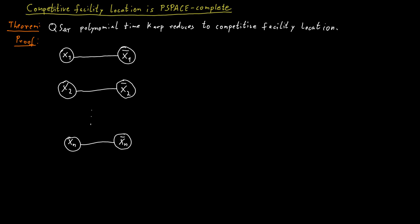Specifically, we choose a large constant c and assign a value of c^n to x1 and not x1, then c^(n-1) to x2 and not x2, continuing down to a value of c for the nodes corresponding to xn and not xn. Because the nodes for x1 and not x1 are so much more valuable than everything else, it makes no sense for a player to start picking something else first. It is left as an exercise to verify that this ensures the only plausible strategy is to pick variables in order.